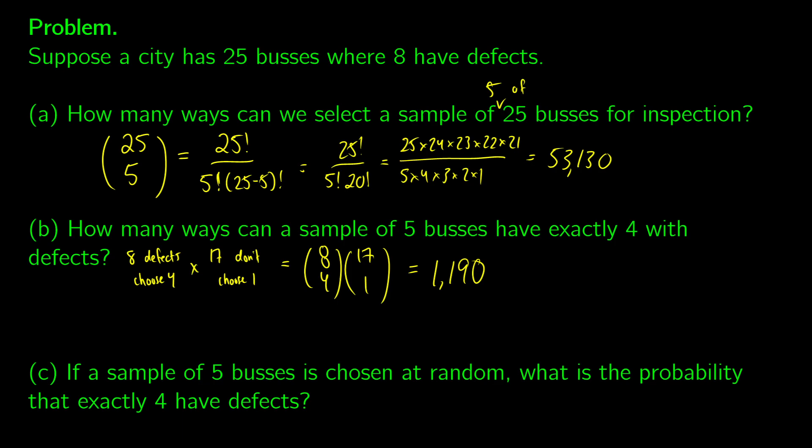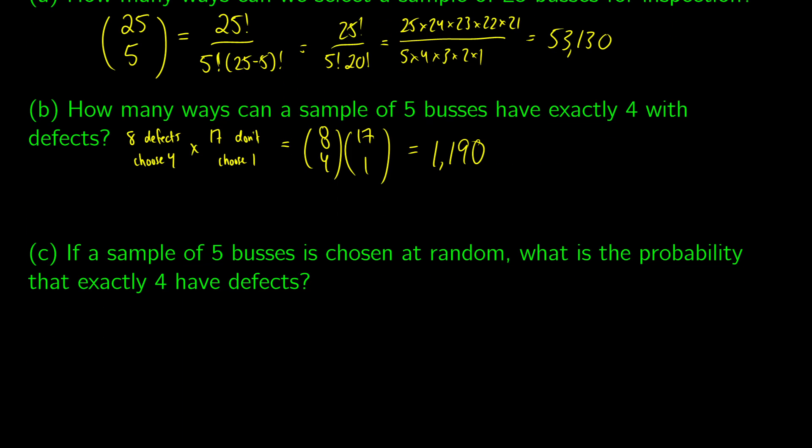So if a sample of five buses is chosen at random, what is the probability that exactly four have defects? Well, what this is going to be is this is going to be the probability of our event, which was what we did in part B, divided by the probability of our sample space. So 25 choosing five buses. So what we're going to get is eight choose four times 17 choose one over 25 choose five.